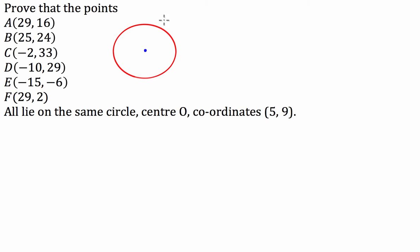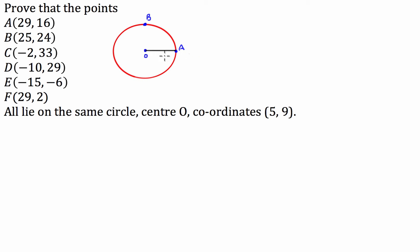So what we have here is we've got a circle and we've got to see if all of these points lie on the red circle. Now how are we going to do that? So what we're going to do is — say we've got a point and we'll call it point A, and we've got another point and we'll call this one point B. Now these two points will lie on the same circle if the distance from the centre of the circle to A and the distance from the centre of the circle to B are the same.